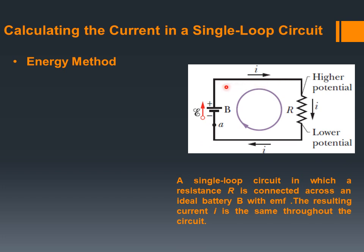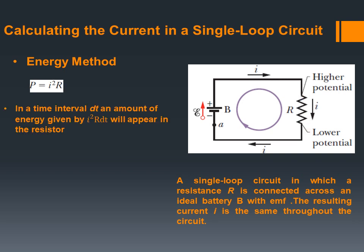This means the resistance inside the wire is zero. Both the upper and lower wires don't have any resistance and the current remains constant. We know the equation P equals I squared R, where P is the power delivered to the charges, I is the current, and R is the resistance of the resistor. In a time interval DT, an amount of energy given by I squared R DT will appear in the resistor — this is the energy gained by the charges provided by the battery.